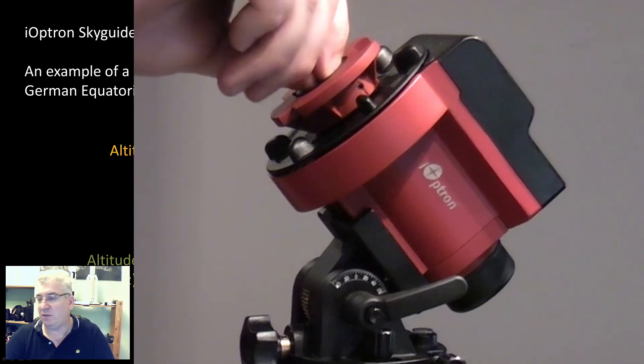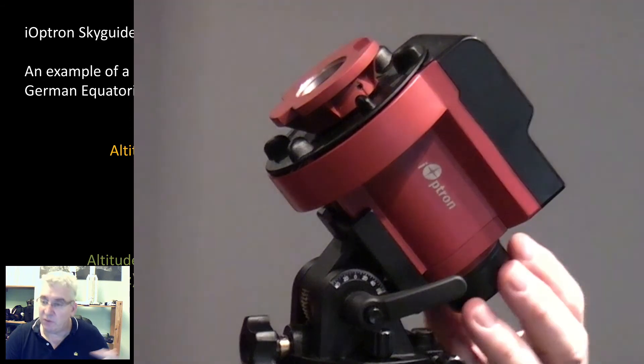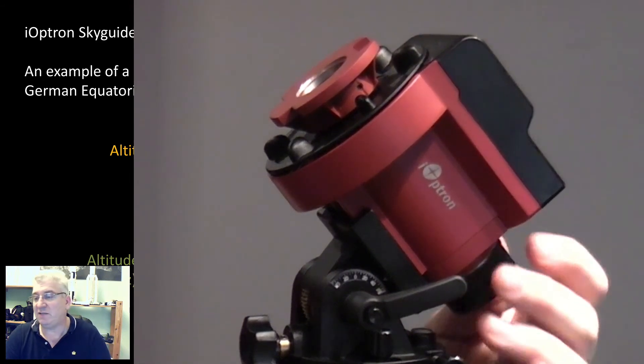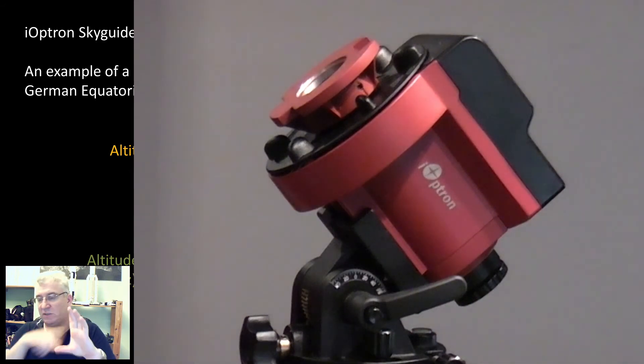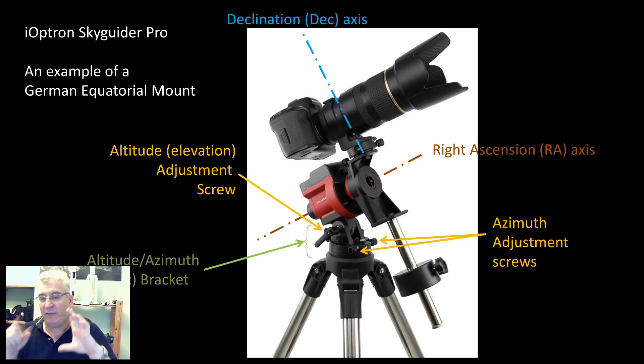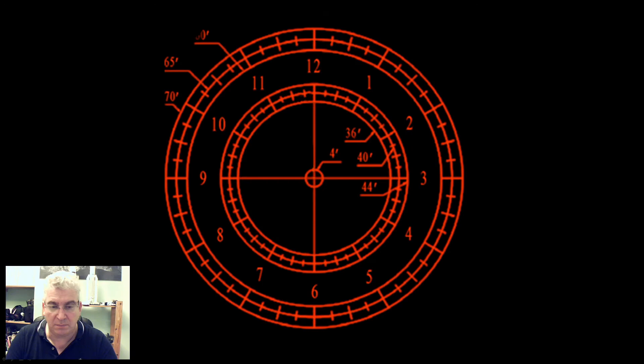You can look through there. There's an illuminated graticule. It has rings on it, which I'll show in a second, which enabled you to, using some software, to determine where Polaris should sit on those rings at a given time of day or a particular point on the Earth. By doing so, the actual axis of the mount is then aligned to the north celestial pole.